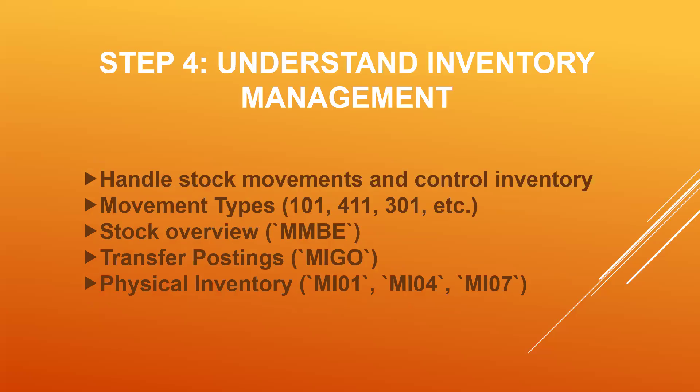Step four: understand inventory management — how you handle the store and inventory. Movement types: 101, 411, 301 — stock replenishment, stock transfer order — all those come under inventory management. How do you check the inventory? MM60 transaction. Transfer posting: MIGO transaction. Physical inventory: MI01, MI04, MI07 transactions. Test the inventory management.